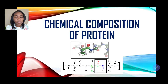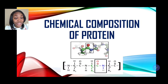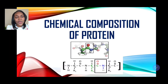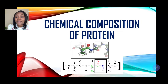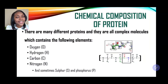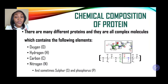Now let us look at the chemical composition of protein. Based on the diagrams on your screen, can you tell what chemical elements make up a protein? There are many different proteins and they are all complex molecules which contain the following elements: oxygen, hydrogen, carbon, nitrogen, and sometimes sulfur and phosphorus.